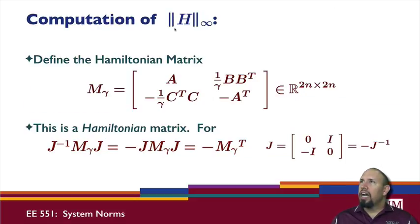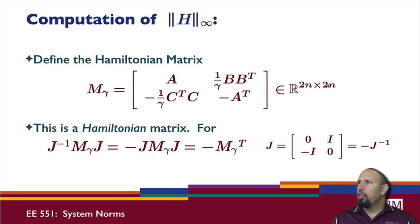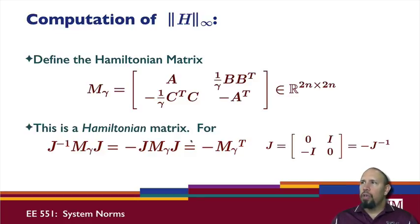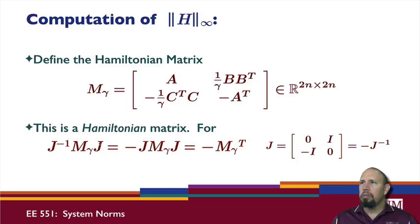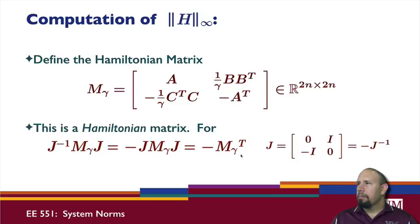The first method uses something called a Hamiltonian matrix. This is the Hamiltonian matrix, and we notice that it is a function of gamma. It involves the A, B, C, D matrices — here I'm assuming that D is zero. This matrix is of dimension 2N by 2N. It's a Hamiltonian matrix. A matrix is Hamiltonian if it satisfies this property: if we take a similarity transformation on it, we get minus the matrix transposed. This shows that it's similar to a skew-symmetric matrix. J here is this matrix, and the similarity transformation is just this.